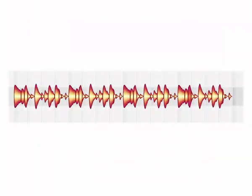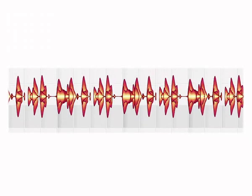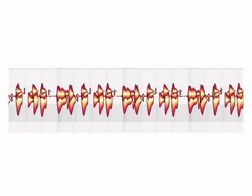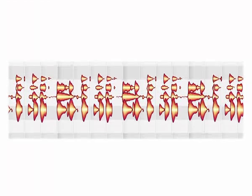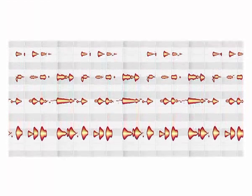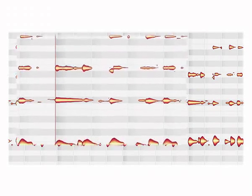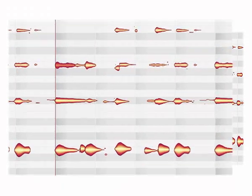Again, this is the guitar. What was inflexible a minute ago now opens up when we look into it with Direct Note Access. Now all notes show up individually, although they haven't been recorded separately. And what you see is what you can also touch.